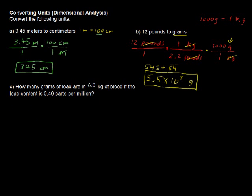Okay, this last one. How many grams of lead are in 6.0 kilograms of blood if the lead content is 0.40 parts per million? Okay, so we have a starting point and an ending point. By the way, this is the typical amount of blood in a person, about 6 kilograms, and this is considered about normal, acceptable. 0.4 parts per million, 0.4 parts of lead per million parts of blood is the way that is understood.